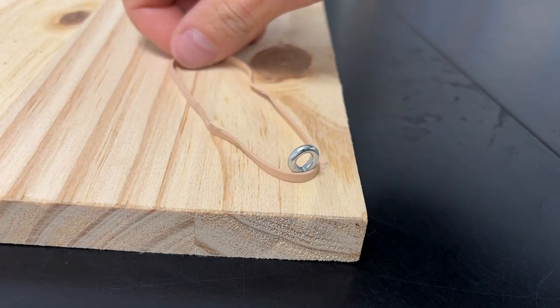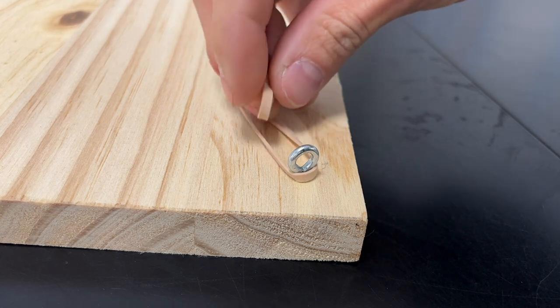Then just take some rubber bands and loop them through the eye hook as shown here, just so that they're connected to it.